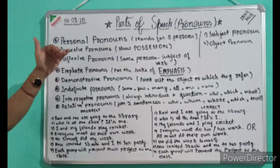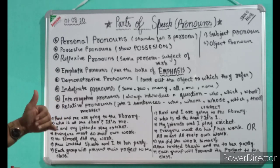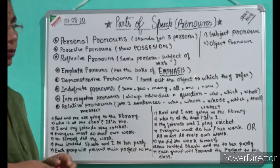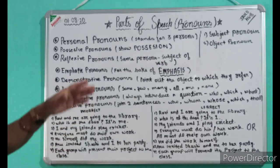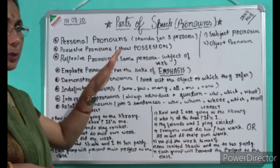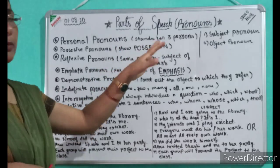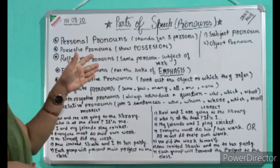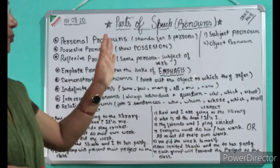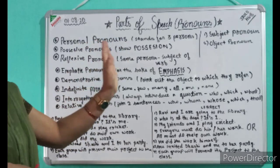Now we shall start one by one. Personal pronoun stands for three persons. The three persons are: first person, second person, and third person. For first person: 'I' singular, 'we' plural. Second person: 'you' singular and 'you' plural. Third person: 'he', 'she', 'it' singular and 'they' plural.